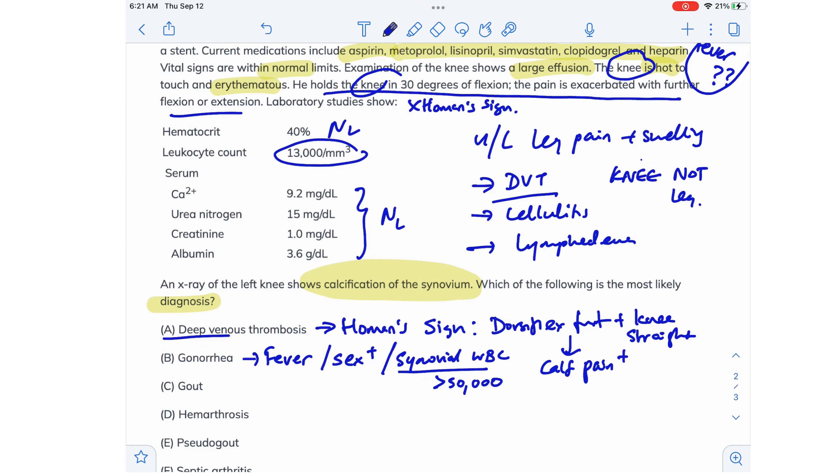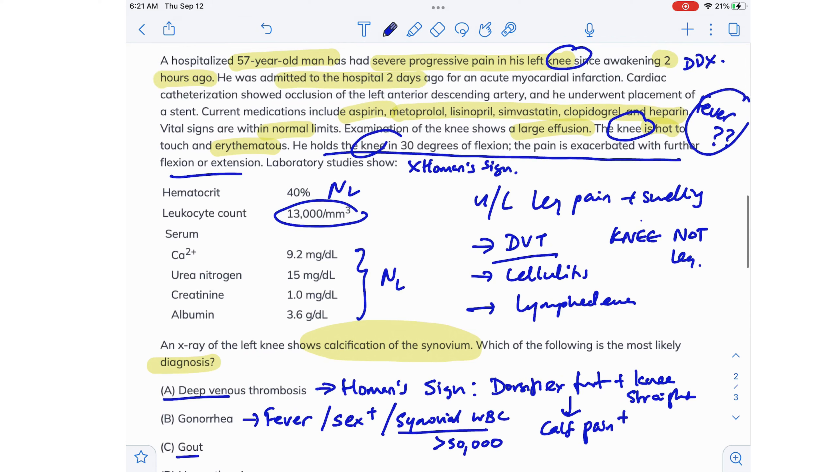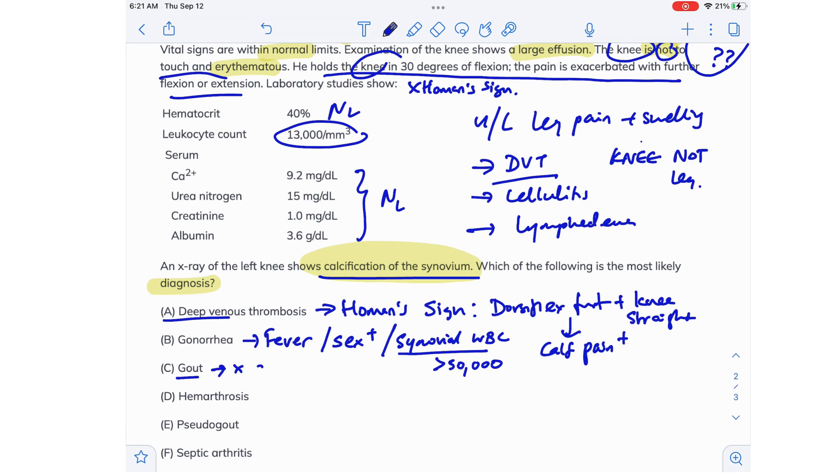And then gout. A hot and erythematous knee can also be seen in conditions like gout. It's a classic presentation of gout. But an X-ray of the knee would never show calcification of the synovium in gout. That is not a characteristic feature of gout. And also gout is a condition that is common in patients taking thiazide diuretics, at least in your exam questions. ACE inhibitors and low doses of aspirin can also cause gout, but in your exam questions they always like to go after thiazide diuretics like hydrochlorothiazide and stuff like that.